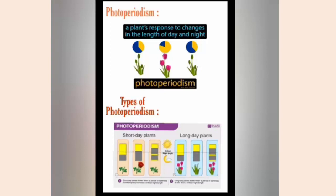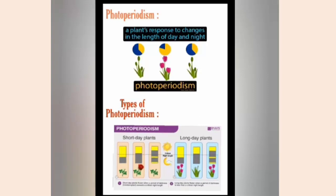Certain plants flower when the days are long; such plants are called long day plants. Example: radish, spinach, etc. Certain plants flower when the days are short; such plants are called short day plants. Example: rice, cotton, tobacco, etc.